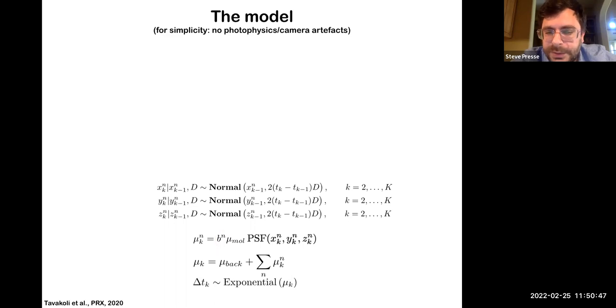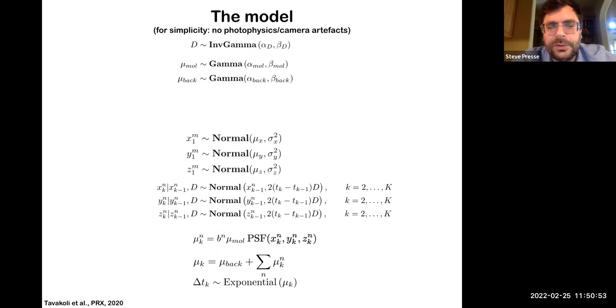Finally, we allow the molecule to diffuse in physical space according to, in this case, diffusion in open space with some diffusion coefficients. I won't get into the details, but we have to place priors that we can discuss. And finally, this is the so-called nonparametric addition. We add a beta Bernoulli process prior on this indicator variable, the b, that allows us, as I said, to flicker these molecules into existence.